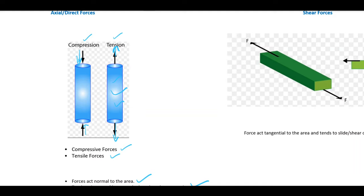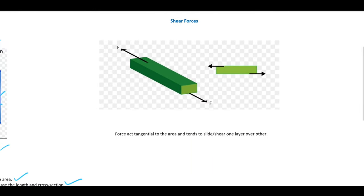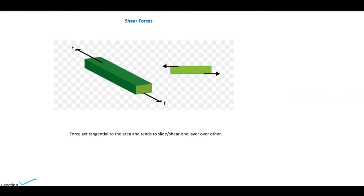Another type is shear forces. These are forces which act parallel to each other but their line of action is different. For example, force F is acting on the top layer and the opposite direction force is acting on the bottom layer, so their line of action is different.